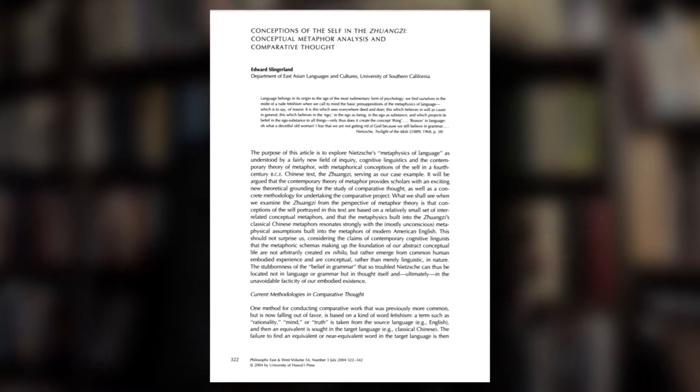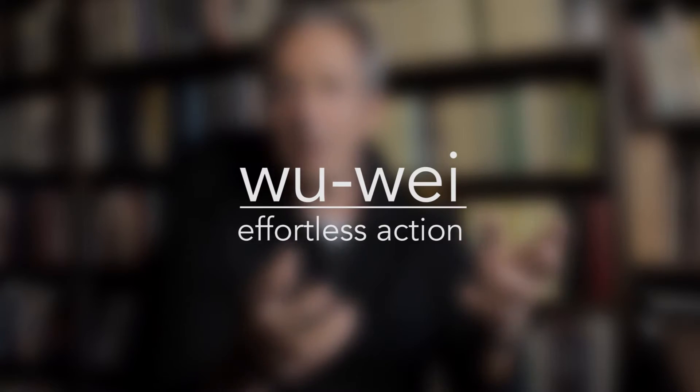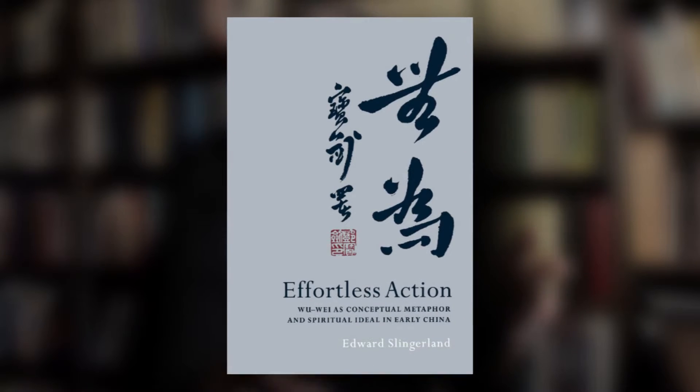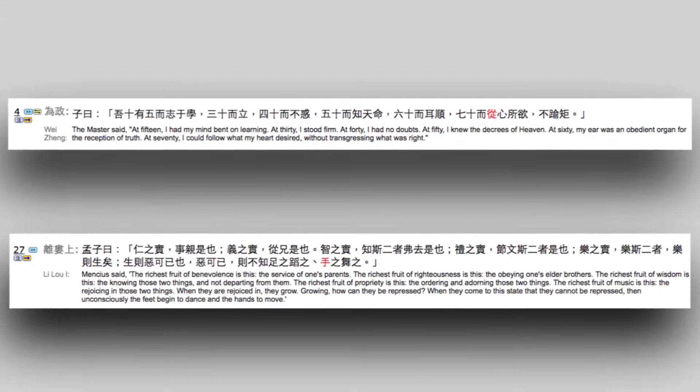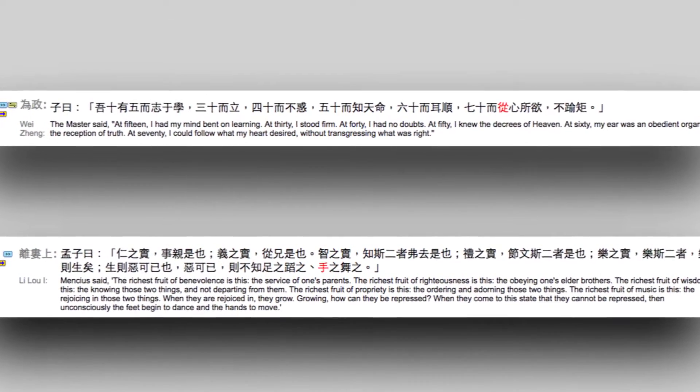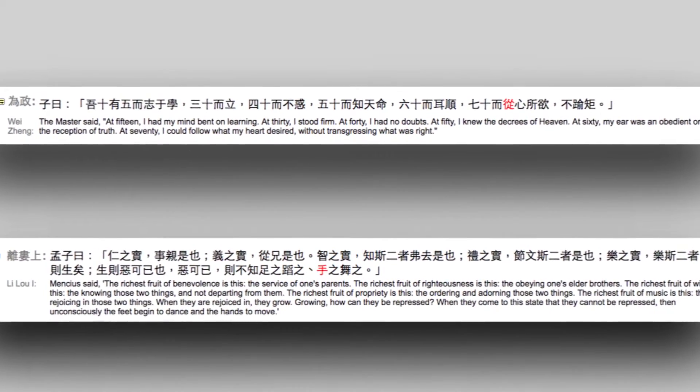I wrote a dissertation about the concept of wu-wei, or effortless action, in early Chinese thought — it literally means non-doing. One of my arguments was that you see this ideal in many texts in early China, even texts that don't use the term at all. Armed with just the tools of traditional intellectual history, I had no rigorous way to demonstrate that. Essentially, all I could do is put stories from these texts next to each other and say, 'Don't they look alike?' I had no rigorous way of identifying whether or not a story was about wu-wei.